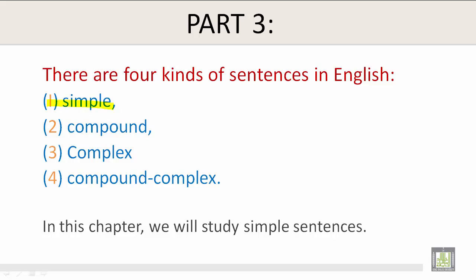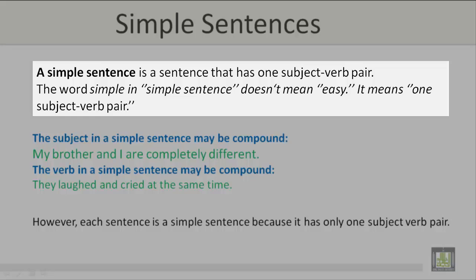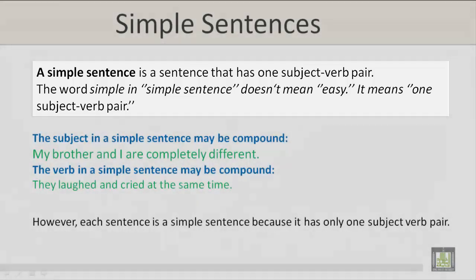Sentence 1 is simple, sentence 2 is compound, sentence 3 is complex, and sentence 4 is compound-complex. In this chapter, we will study simple sentences. A simple sentence is a sentence that has one subject-verb pair. The word 'simple' in simple sentence doesn't mean easy — it means one subject and verb pair.